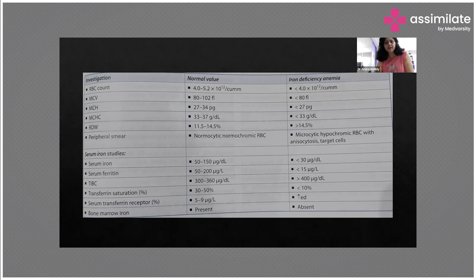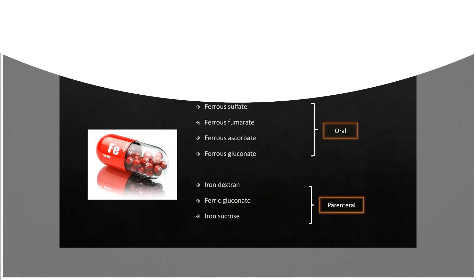Transferrin saturation is normally 30 to 50 percent but reduced to around 10 percent in iron deficiency. Serum transferrin receptors, normally 5 to 9, will be increased as the body tries to acquire more iron. When iron levels are very low, the body itself tries to obtain more and makes its own compensatory changes. On bone marrow examination, marrow cells will be present but iron levels will be absent.